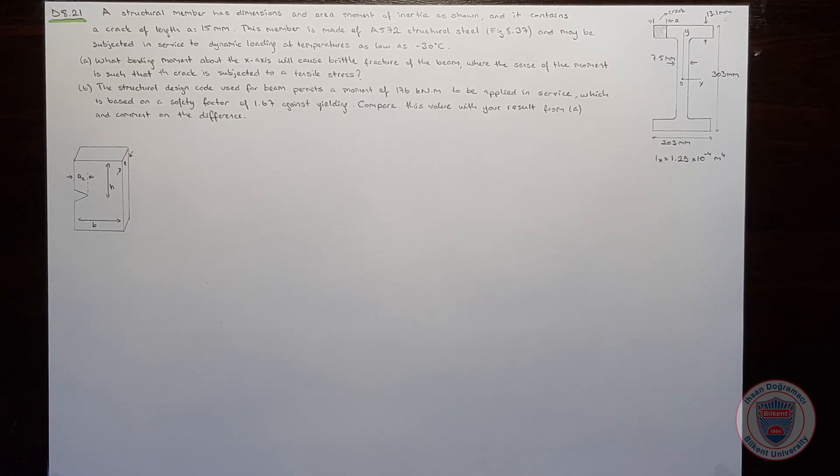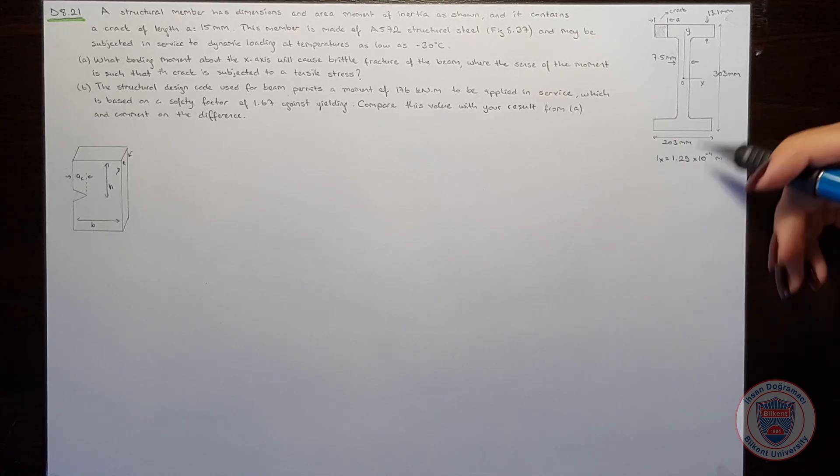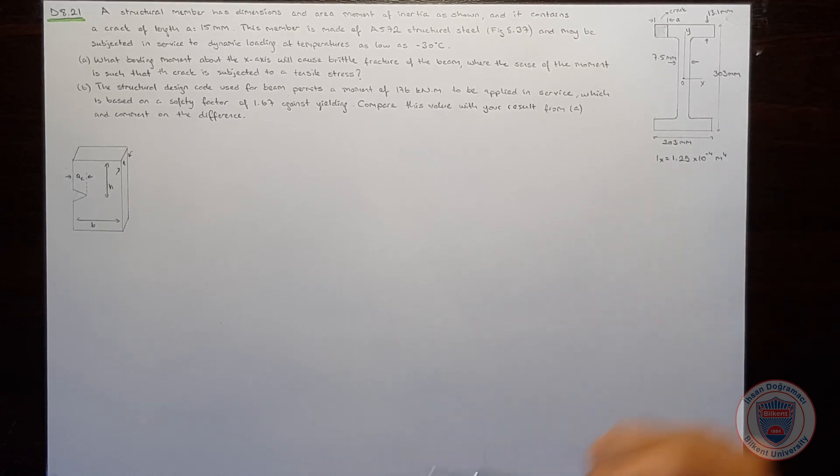We have a structural member which is made of A572 structural steel, as you can see in the figure, and it contains a crack of length A equal to 15 mm.